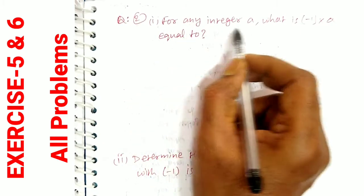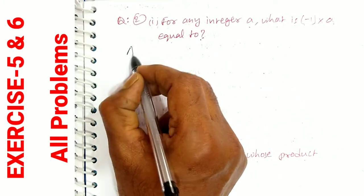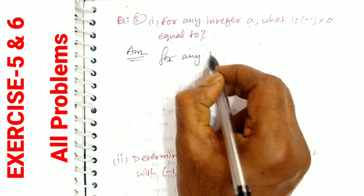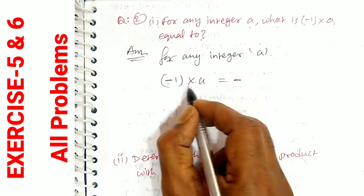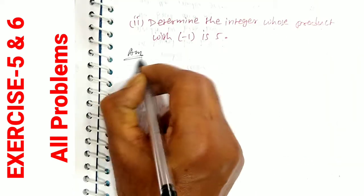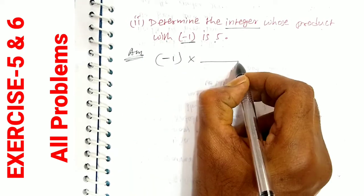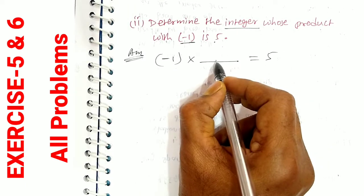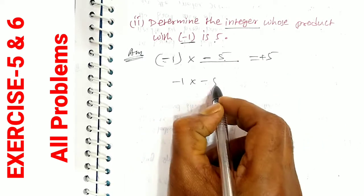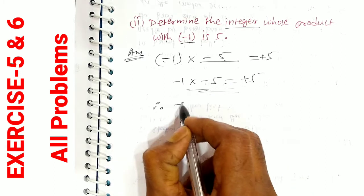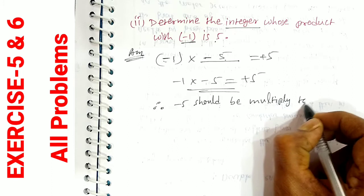Question number 2, first bit: for any integer A, what is minus 1 into A equal to? This is a simple question. For any integer A, minus 1 into A: minus into plus gives minus, so minus 1 into A equals minus A. Second bit: determine the integer whose product with minus 1 equals 5. Minus into minus is plus, so minus 1 into minus 5 equals plus 5. Therefore, minus 5 should be multiplied by minus 1 to get 5.